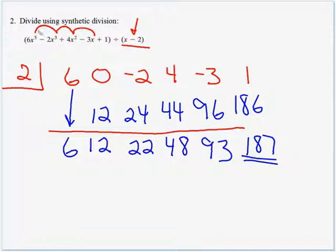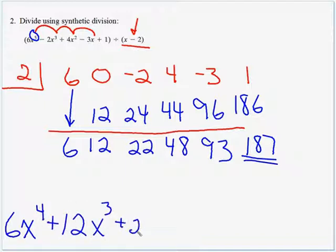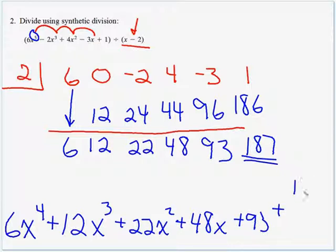Okay, we started with x to the fifth, and we're going to knock that down one power. So that will be 6x to the fourth, and then we just go right downhill. 12x cubed, 22x squared, 48x, 93. And then our remainder is 187 over x minus 2. There we go.